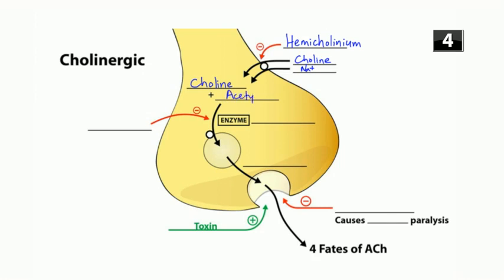Once choline is in the cell, it binds to acetyl-CoA to form acetylcholine. The enzyme that facilitates this is choline acetyltransferase. That acetylcholine gets packaged into a vesicle. The drug that inhibits packaging of acetylcholine into vesicles is vesamicol — when vesamicol is present, acetylcholine cannot be packaged into a vesicle.